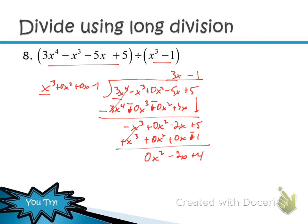Drop the 0x² placeholder since we don't need it anymore. The remainder is −2x + 4, so add (−2x + 4) all over (x³ − 1) — we just put what we were originally dividing by in the denominator. That's your long division answer.